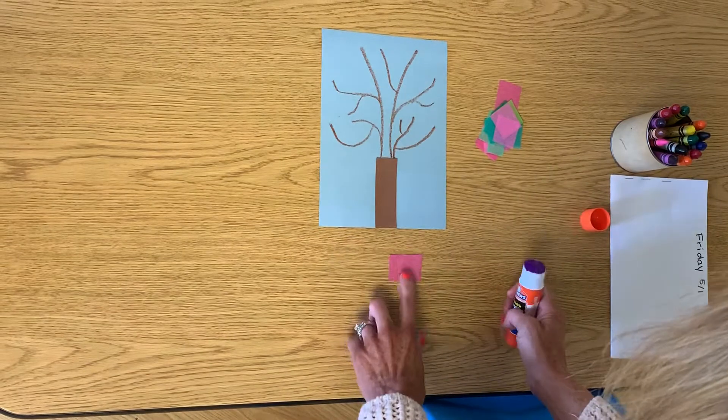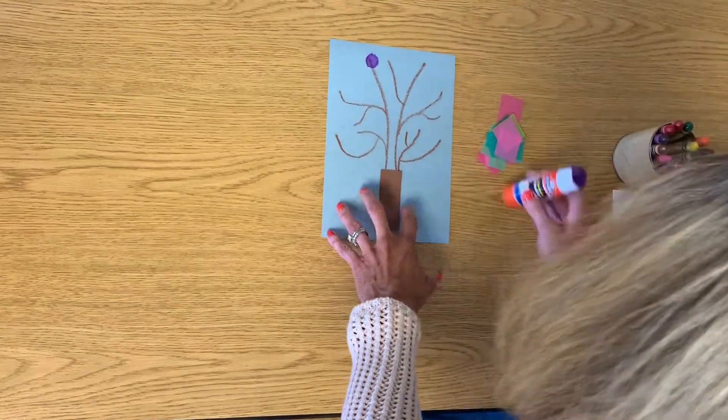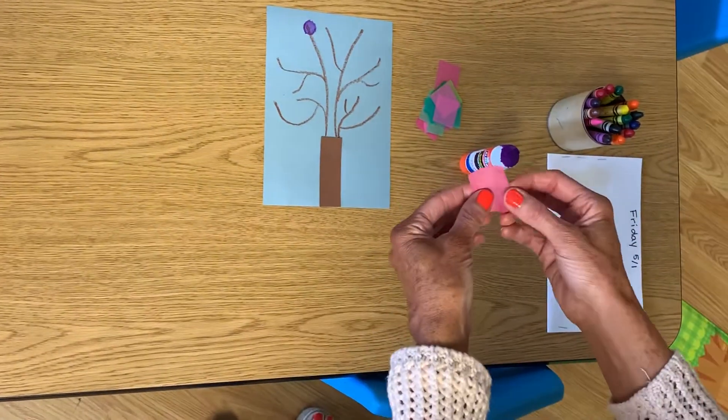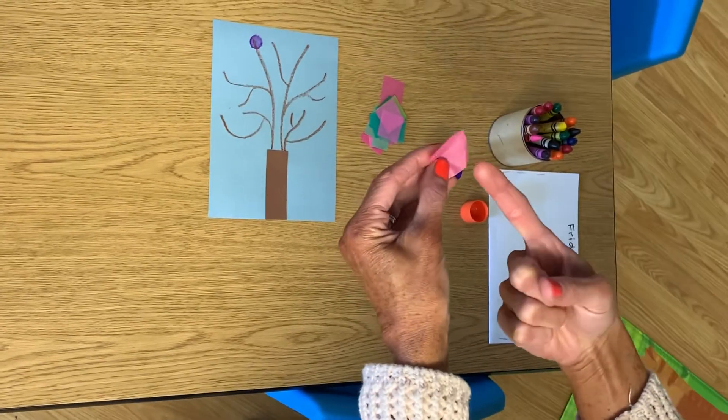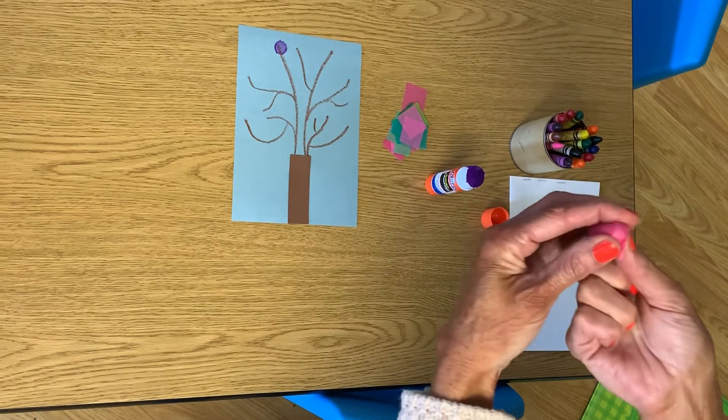So to put my flowers on, I'm going to go to a tree branch and I'm going to put a little dot of glue. I'm just going to start with one dot of glue. And I'm going to pick the tissue paper up. I'm going to stick my finger up, my pointer finger, and I'm going to wrap the tissue paper around my finger.